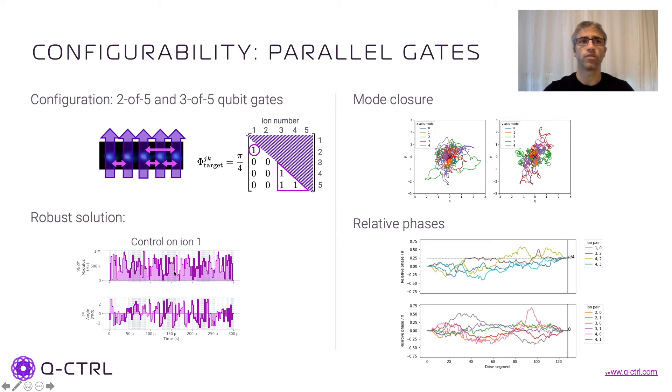And then we also have the illustration of the different modes which make very complicated trajectories in phase space, but they are always coming back to the origin. And here we have a plot of the phases that start at zero, go through their dynamics, and end up at π/4, exactly for the pair of ions that we are entangling here, and for all the remaining pairs it goes back to zero in the end.